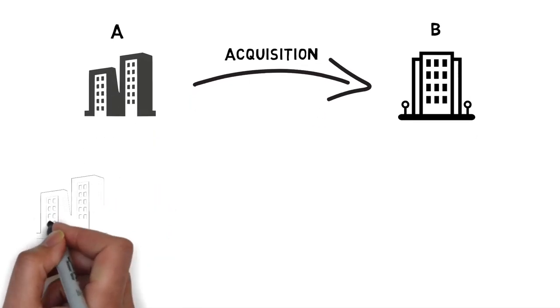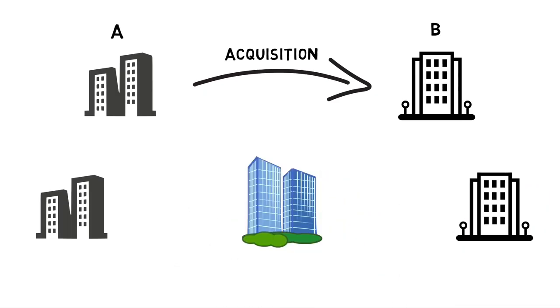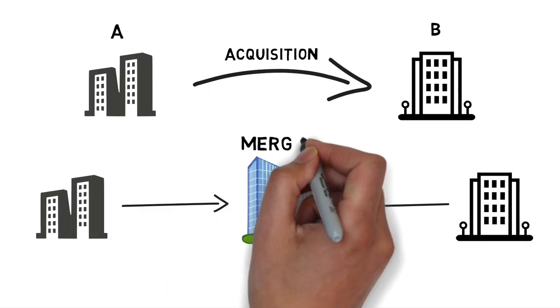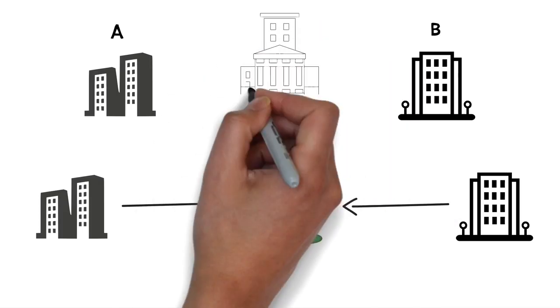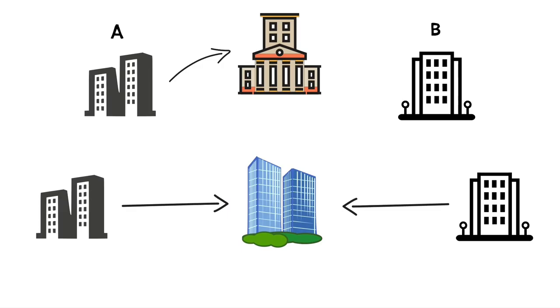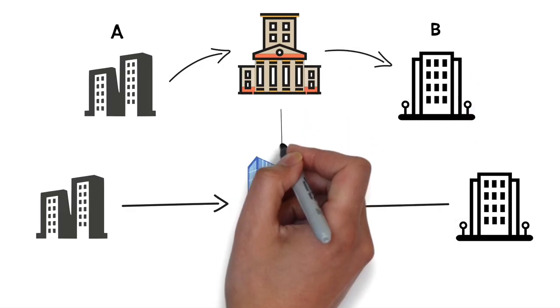When company A and company B consolidate together to form a single company, it is called a merger. The investment bank helps in valuation of these companies and identifies the strength of each division, which allows mergers and acquisitions to happen at a fair price.